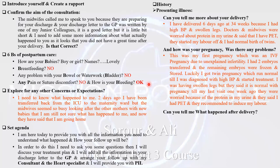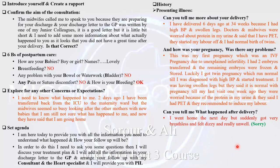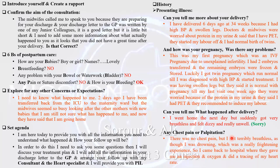The patient continues: 'This was my first pregnancy, which was an IVF pregnancy due to unexplained infertility. I had two embryos transferred and the remaining embryos were frozen and stored. I got a twin pregnancy which ran normally until I was diagnosed with high blood pressure. I was having swollen legs, but they said it was normal in pregnancy, until my last visit one week ago when they found protein in my urine and recommended inducing labour.' When you ask 'What happened after delivery?', again use an open question — the role player will provide all necessary details.